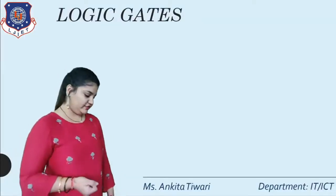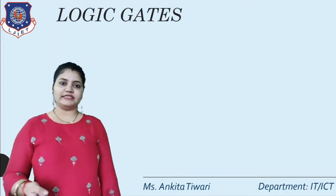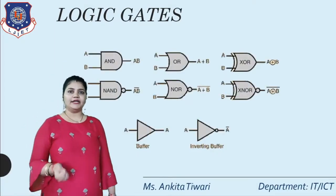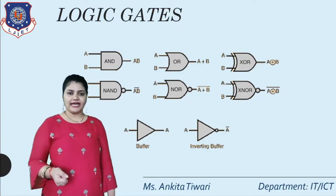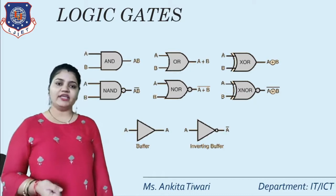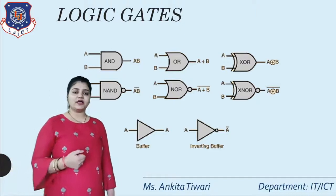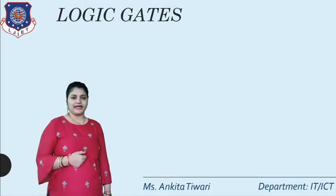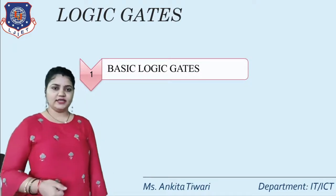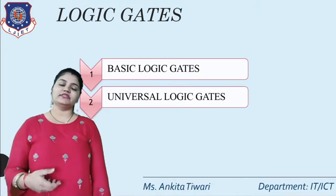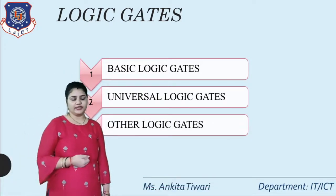In Logic Gates, we are having different types of gates available: AND, OR, NOT as Basic Gates, then NAND and NOR, then XOR and XNOR. These gates are based on three categories: the first is Basic Logic Gates, the second is Universal Logic Gates, and the third is Other Logic Gates.